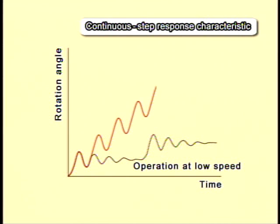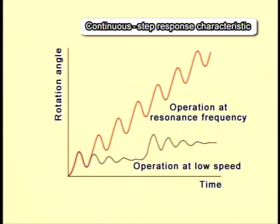When it is operated at a little higher speed, the overshooting timing and the motor's forward movements are overlapped, making the vibrations more violent. The frequency at this time is called a resonant frequency.